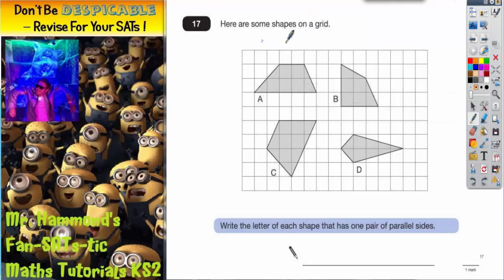Question 17. Here are some shapes on a grid, and we've got shape A, B, C and D. Write the letter of each shape that has one pair of parallel sides.